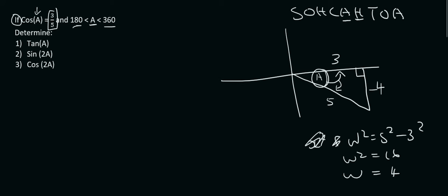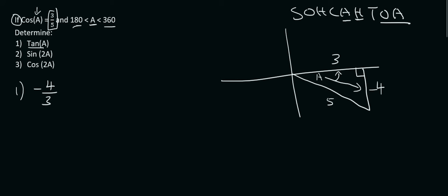So now we have our triangle figured out, so we can work out the tan of A. Well, we know that tan is opposite over adjacent, and this angle here is A, so we can just use that angle. So the opposite is minus 4, and the adjacent is 3, so the answer for number 1 is going to be minus 4 over 3.